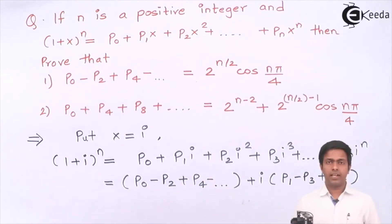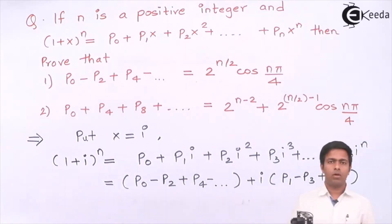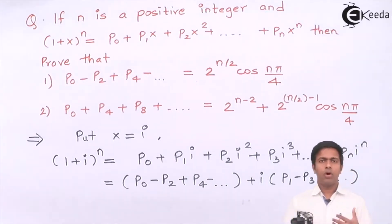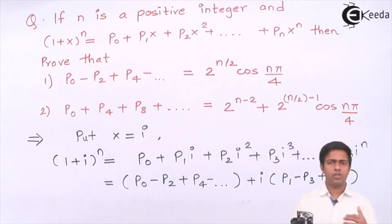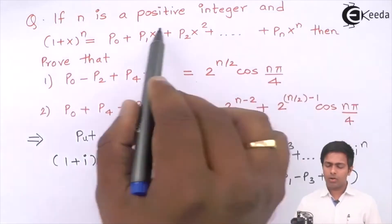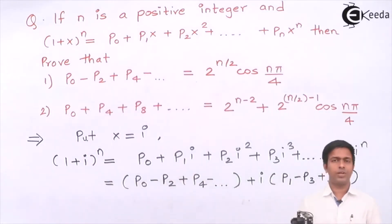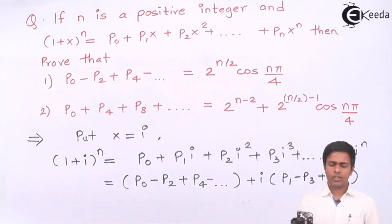Now let's prove the second result. In the second result we want all terms whose indices are multiples of 4, and the right-hand side has two terms. We need to remove p1, p2, p3, p5, p6, p7, p9, p10, p11, and so on — all odd terms and also certain even terms like p2, p6, p10. To do this, we'll substitute different values of x and create different equations, then make adjustments to get the answer.